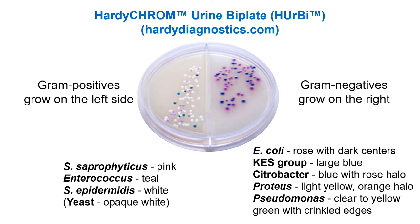Plates can be both selective and differential simultaneously, sometimes differentiating many different species. A commercially available plate used in hospitals for testing urine has a physical divider between two halves — one side selects gram-positives, the other selects gram-negatives — and compounds within the media differentiate different gram-positives and gram-negatives from each other based on bacterial metabolism and enzyme activity.